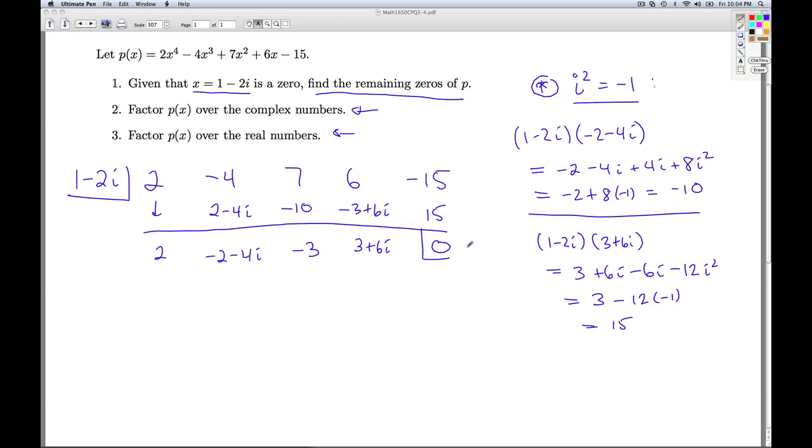Now remember, our ultimate goal in doing the synthetic division is to get down to a quadratic. I started with a fourth-degree polynomial. I've done one synthetic division, I've knocked it down to a third-degree polynomial. I've got four non-zero coefficients, and they're truthfully frightening because they're non-real. Two of these coefficients are non-real.